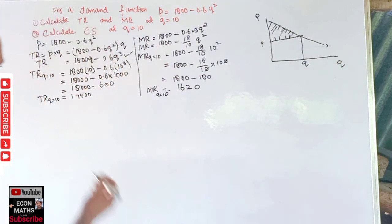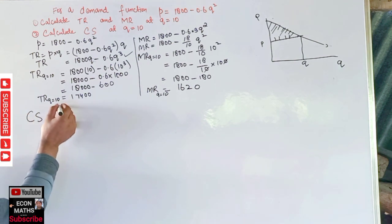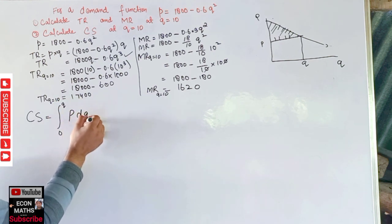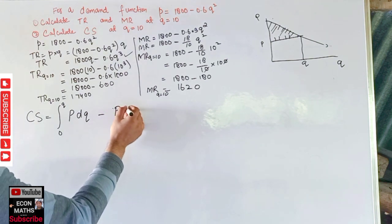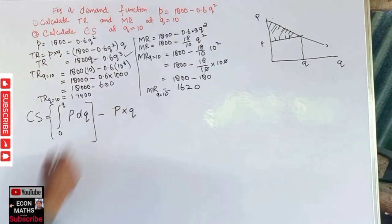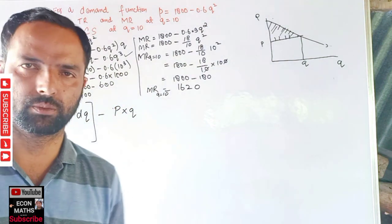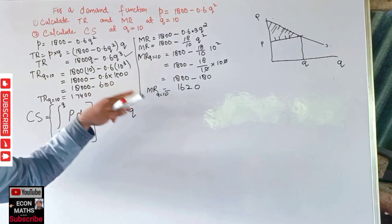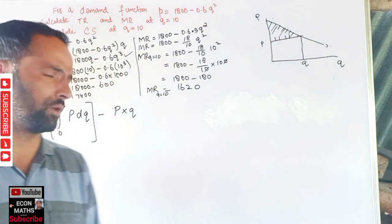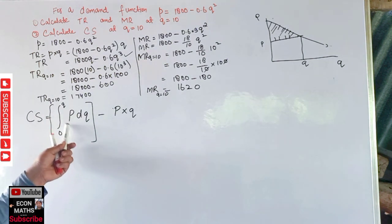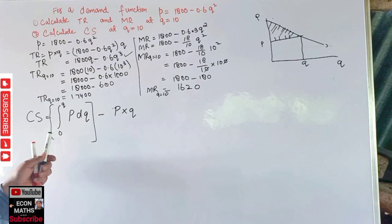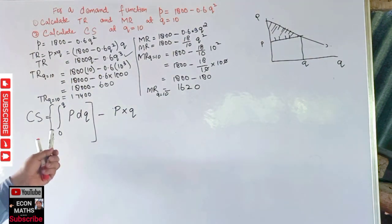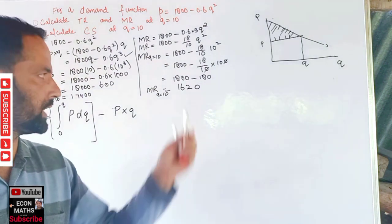Consumer surplus is given by the definite integral from zero to equilibrium quantity of p dq, minus p times q. This formula shows the difference between what consumers are willing to pay — the integral of the demand function — and the price or revenue they actually give, which is p×q. We integrate the demand function with respect to quantity from zero to the equilibrium quantity.